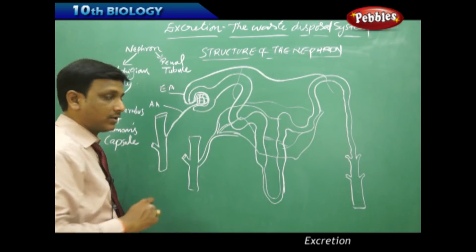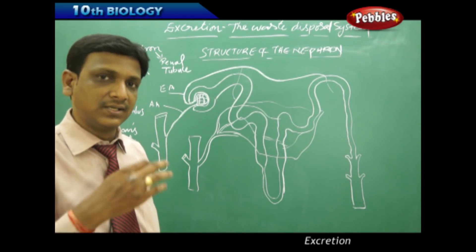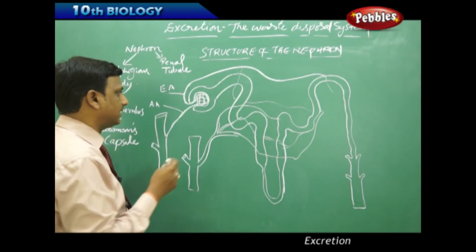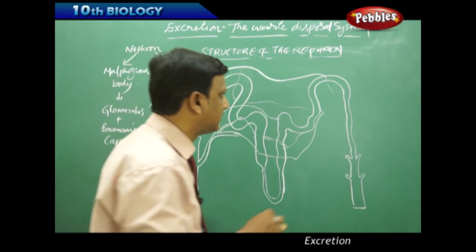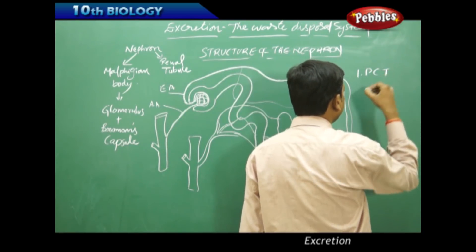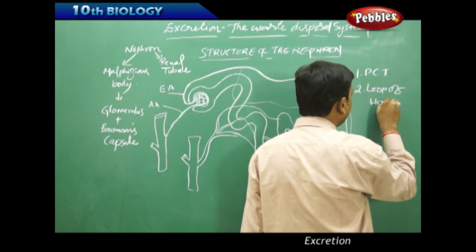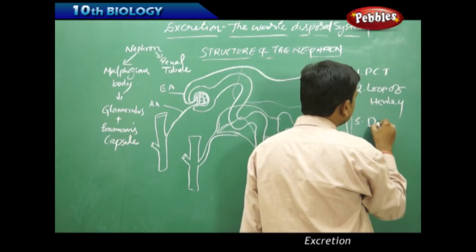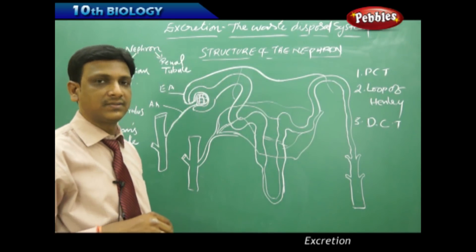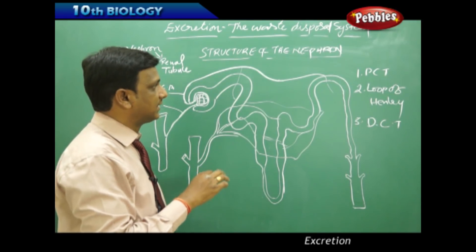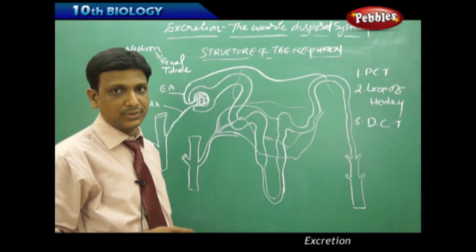Every nephron is richly supplied with blood vessels for the exchange of waste materials into the renal tubule. The renal tubule has three major parts: PCT (proximal convoluted tubule), the loop of Henle, and DCT (distal convoluted tubule).